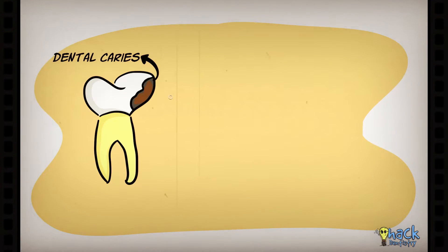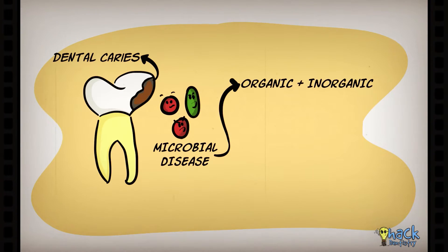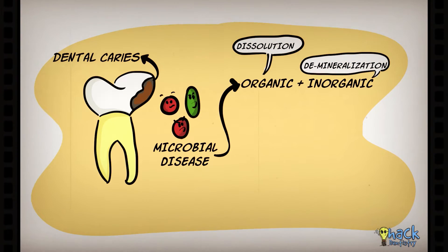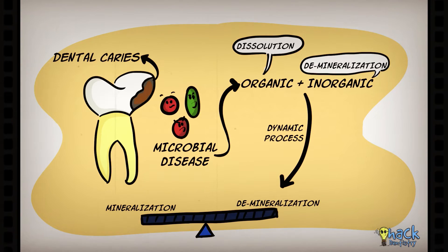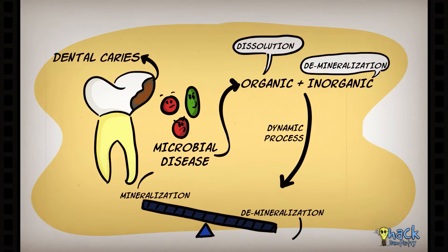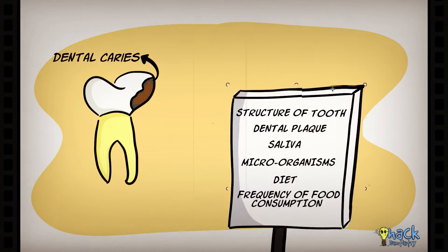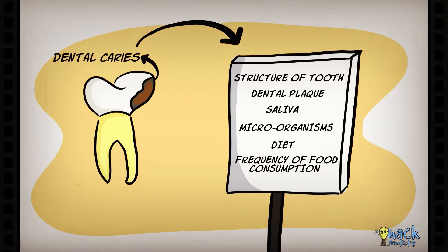Dental caries is a microbial disease of the calcified tissues of the tooth characterized by demineralization of the inorganic portion and dissolution of the organic portion of the tooth. It is a dynamic process where the balance between mineralization and demineralization tilts in favor of demineralization. This balance depends on several factors like structure of tooth, dental plaque, saliva, microorganisms, diet consumed and the frequency of food consumption.